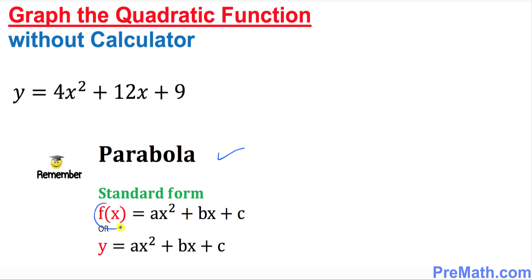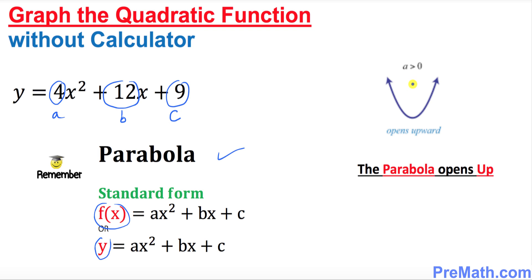In our case, a is going to be 4, b is going to be positive 12, and c is going to be 9. Our parabola is going to open upward because a is 4 — a positive leading coefficient.